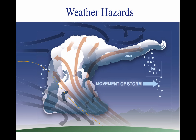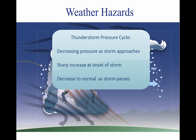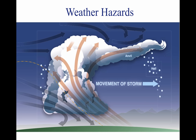Rain at the surface does not mean the absence of hail aloft. Possible hail should be anticipated with any thunderstorm, especially beneath the anvil of a large cumulonimbus. Hailstones larger than one-half inch in diameter can significantly damage an aircraft in a few seconds. Generally, visibility is near zero within a thunderstorm cloud. Ceiling and visibility may also be restricted in precipitation and dust between the cloud base and the ground. Pressure usually falls rapidly with the approach of a thunderstorm, rises sharply with the onset of the first gust and arrival of the cold downdraft and heavy rain, and then falls back to normal as the storm moves on. This cycle of pressure change may occur in 15 minutes. If the pilot does not receive a corrected altimeter setting, the altimeter may be more than 100 feet in error.